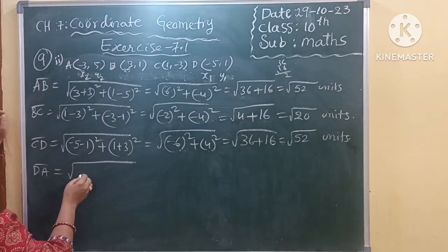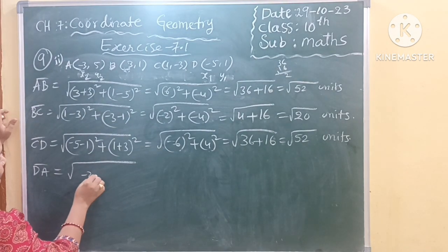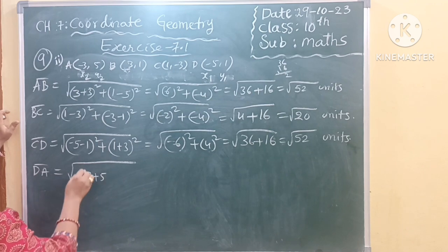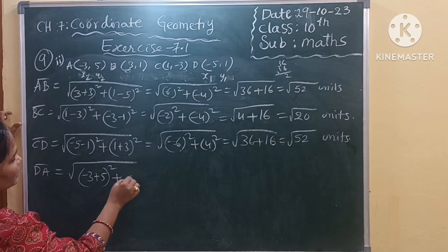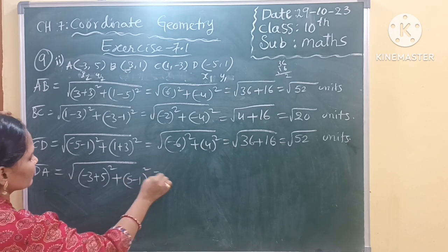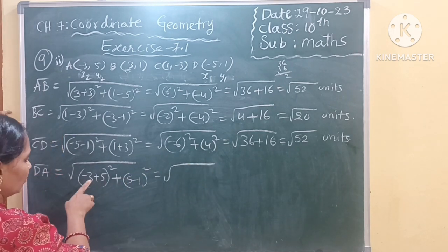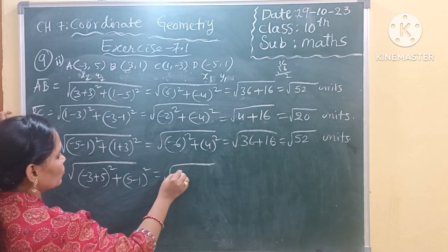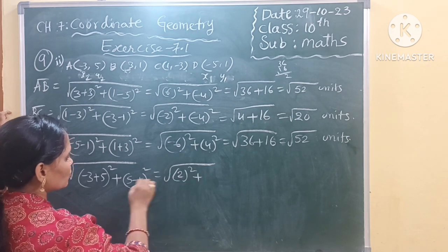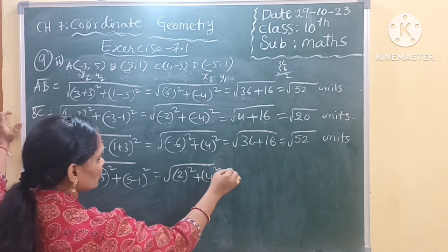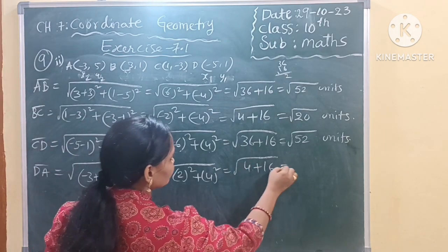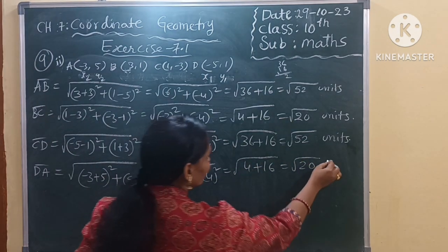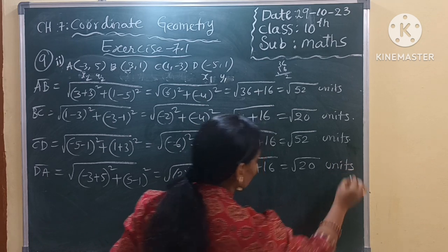So X2 minus X1, minus 3 minus minus 5. X2 minus X1 whole square, Y2 minus Y1 whole square. Now minus 3 plus 5, so plus 2 will give. So here 4 minus 0 is 4. 4 square, square root of 4 plus 16, square root of 20 units.